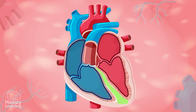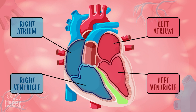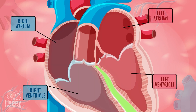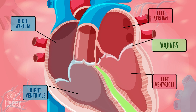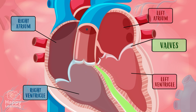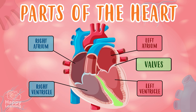Each one of these parts has two chambers or cavities. The upper cavities are called the right and left atrium, and the lower cavities are called the right and left ventricle. The heart also has four doors called valves — these valves open to let blood in and close so the blood can't go back.